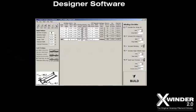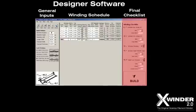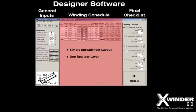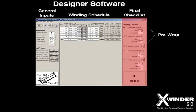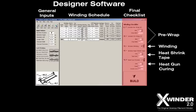The designer software consists of three parts: the general input section, the winding schedule section, and the final checklist section. The winding schedule acts like a spreadsheet with one row for each filament layer, and each layer can have its own winding angle and many other parameters. The final winding checklist can include five distinct steps including two pre-wrap steps if desired, the winding schedule itself, a heat shrink tape step to compress the part and squeeze out the excess glue, and a final heat gun curing process if desired. The designer then creates and outputs the G-code file.